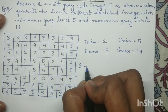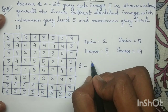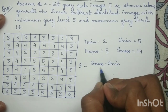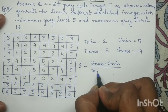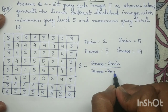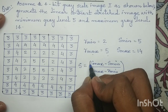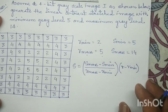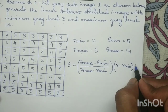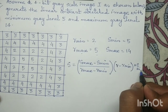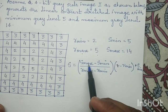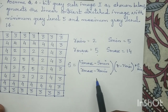In my previous lectures, I have already discussed this formula for linear contrast stretching or histogram stretching: s = ((s_max - s_min) / (r_max - r_min)) × (r - r_min) + s_min. In this equation, we will substitute the values of s_max, s_min, r_max, and r_min to determine the equation of s in terms of r.